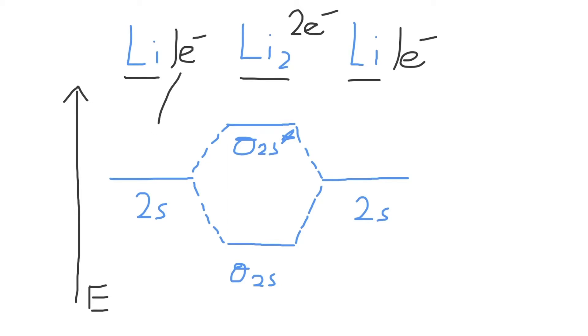This one electron will go into our 2s orbital. And the same thing with this one. Then, according to the Aufbau principle, we'll fill in our molecular orbital diagram with the lowest energy orbital first.